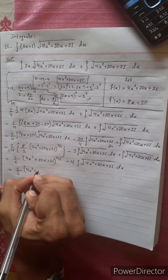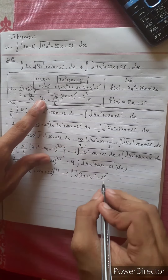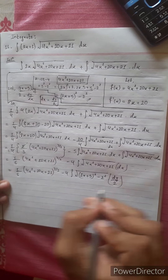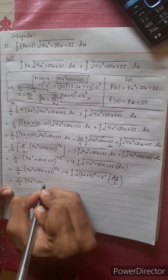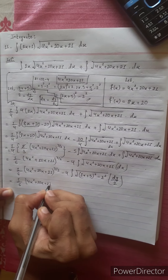Minus 4 times the integration, we have (2x + 5) whole squared minus 2 squared dx. Since dx equals dy/2, because we substituted y = 2x + 5, the derivative gives dx = dy/2. This equals 1/6 times 4x squared plus 20x plus 21 to the power 3/2, minus 2 times integration of y squared minus 2 squared dy.